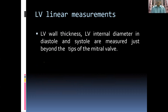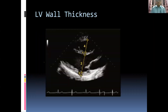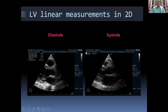The LV wall thickness, internal diameter in diastole and systole are measured just beyond the tips of the mitral valve. For linear measurements in 2D, again, in both systole and diastole the mitral valve is closed. Take the biggest dimension as diastole and the smallest dimension as systole.